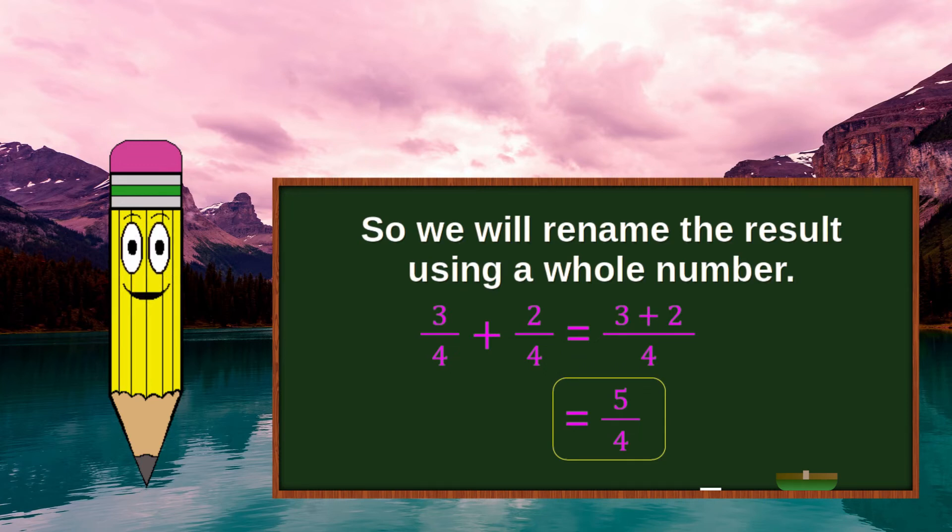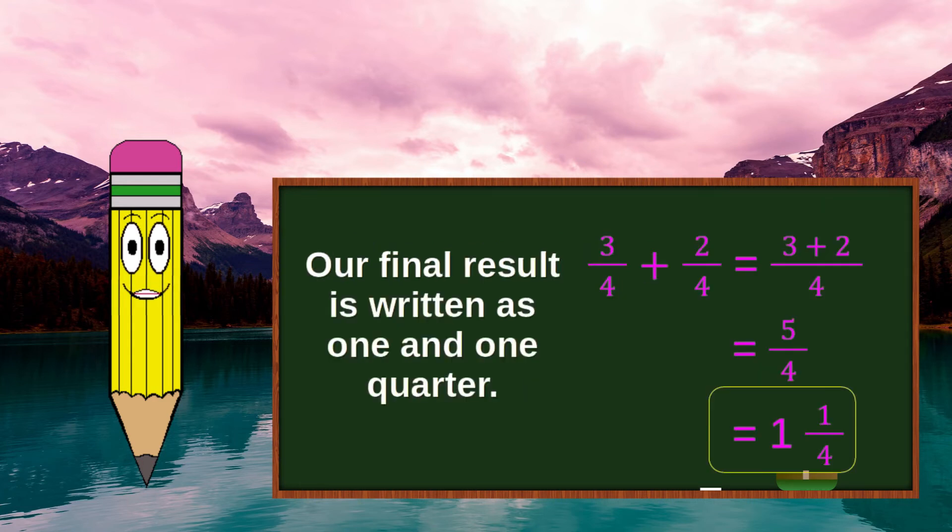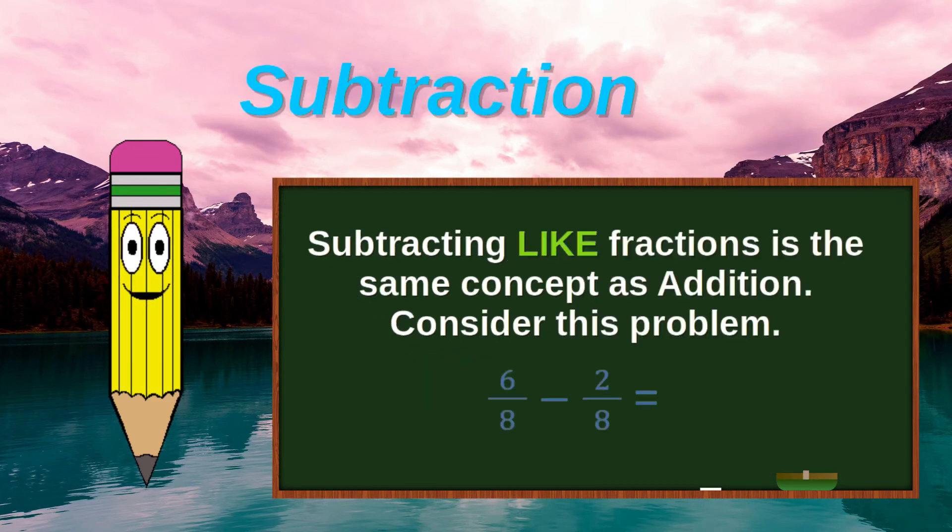Using a whole number, since 4 over 4 equals 1, our final result is written as 1 and 1 quarter. Subtraction.